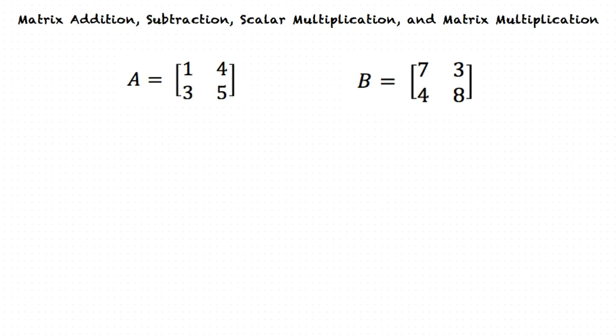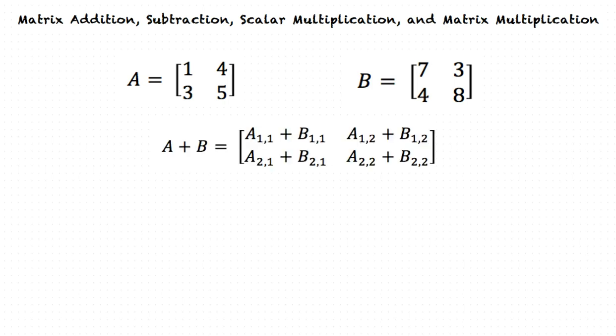Now we can add Matrix A to Matrix B. This will look like A plus B is equal to Row 1: A11 plus B11, A12 plus B12; Row 2: A21 plus B21, and A22 plus B22.